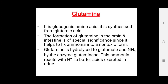Glutamine is a glucogenic amino acid and is synthesized from glutamic acid. The formation of glutamine in the brain and intestine is of special significance because it helps to trap ammonia into a non-toxic form. Glutamine is hydrolyzed to glutamate and ammonia by the enzyme glutaminase.